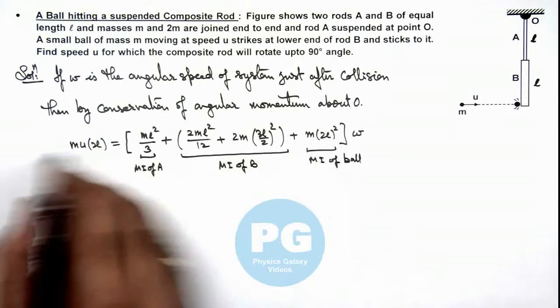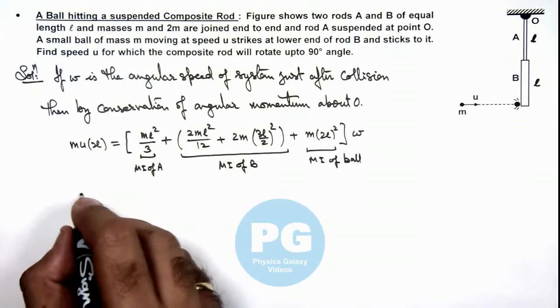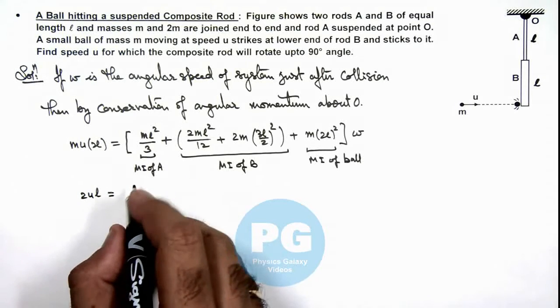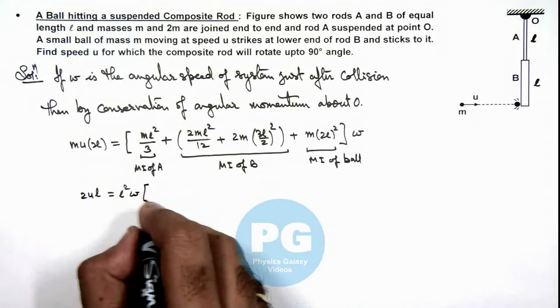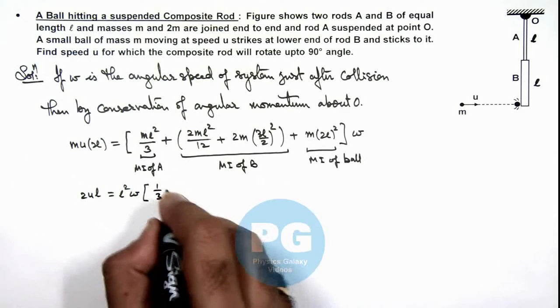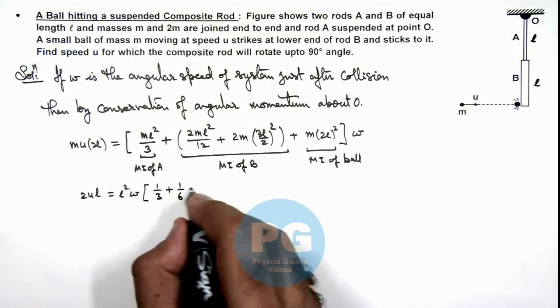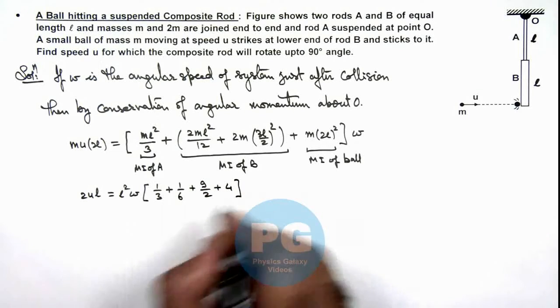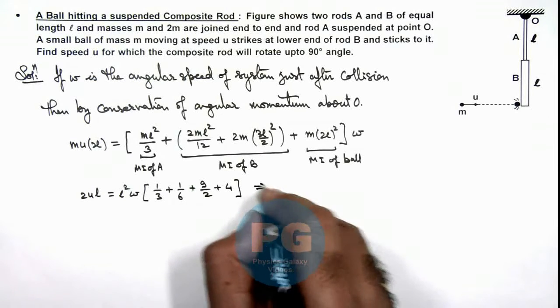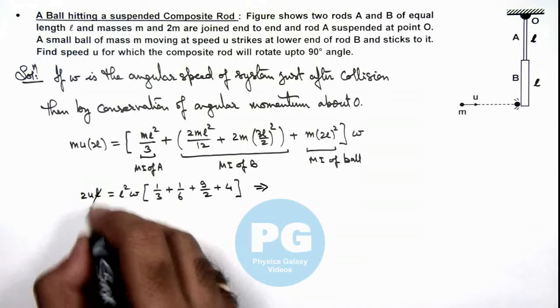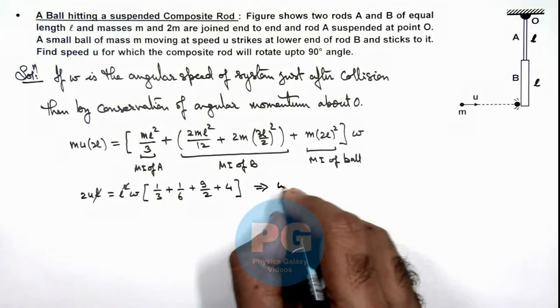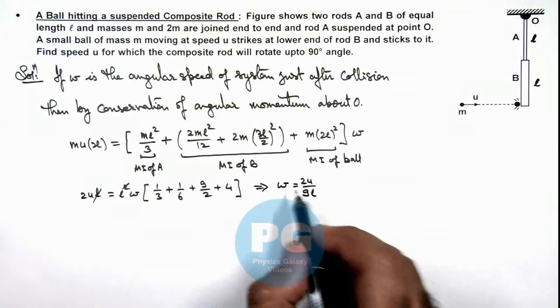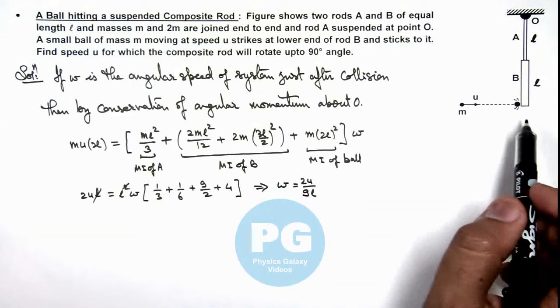If we simplify, m gets cancelled out and this is giving us 2ul equals l² omega multiplied by 1/3 plus 1/6 plus 9/2 plus 4. Simplifying this relation, l also gets cancelled out. The value of omega we are getting is 2u upon 9l, that is the angular speed of this system just after collision.